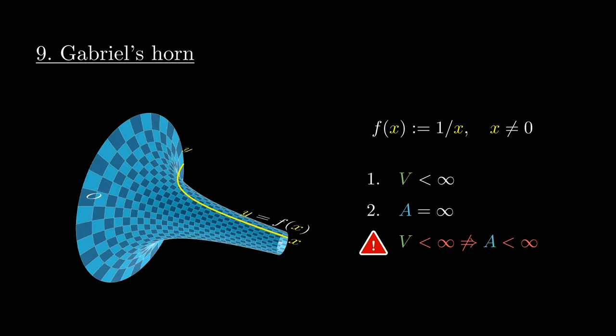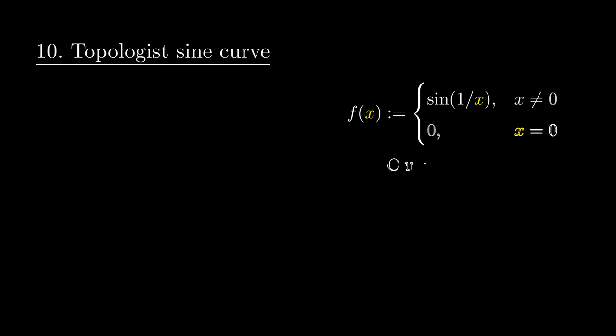And in topology, which in a sense generalizes calculus, we have the topologist sine curve, which is defined to be the function sine of 1 over x when x is non-negative.